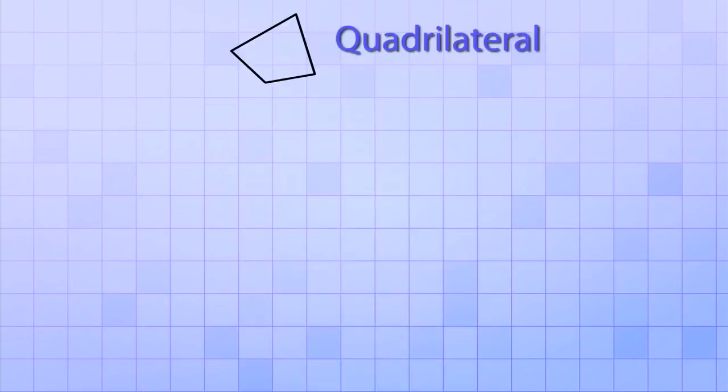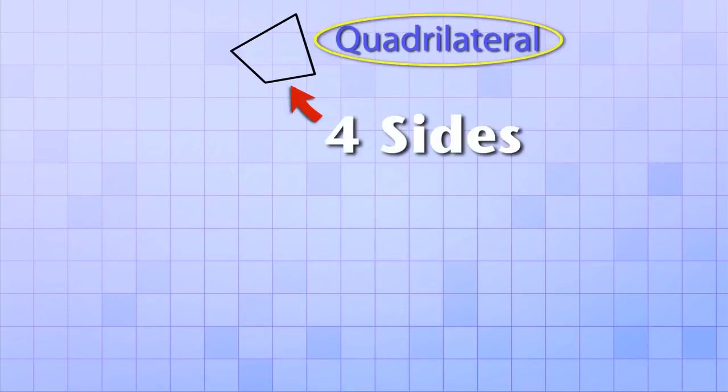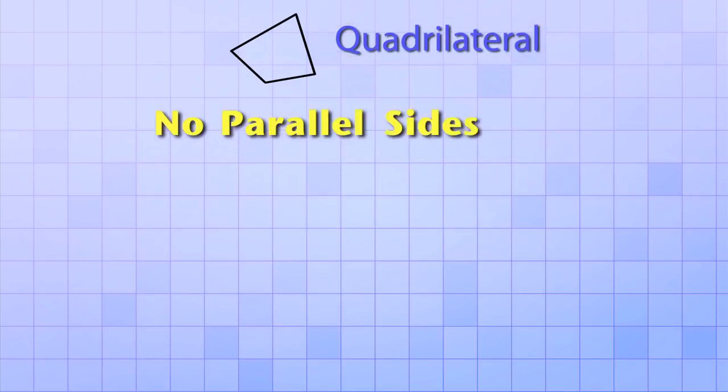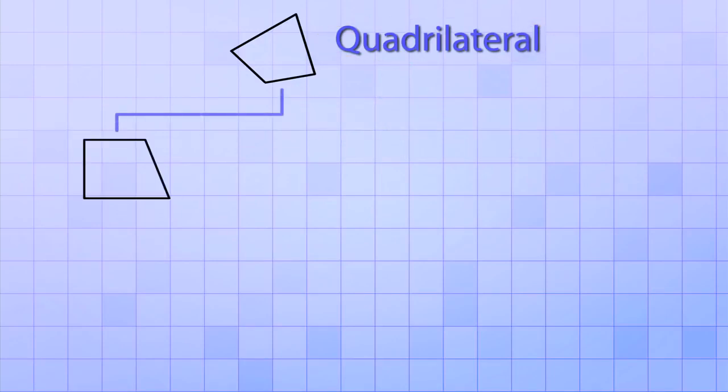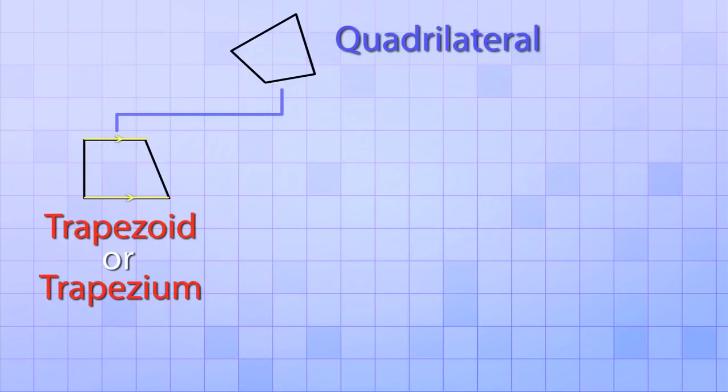So to summarize, any polygon that has exactly four sides is called a quadrilateral. And if it has no parallel sides, we still just call it a quadrilateral. But if it has one and only one pair of parallel sides, we call it a trapezoid or a trapezium. Or if it has two pairs of parallel sides, we call it a parallelogram.